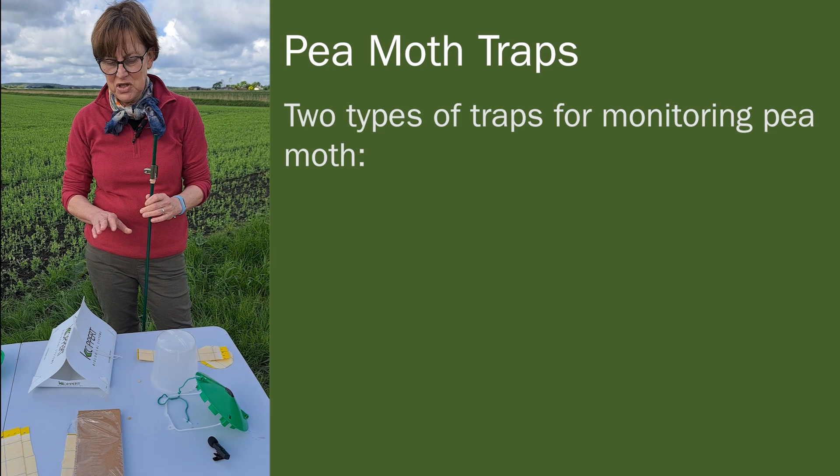I can't emphasise enough the importance of doing the monitoring and using our tool at PGRO. The system also tells you when you don't need to spray — if you don't reach a threshold in combining peas, there isn't a requirement to apply insecticides in the crop. That's equally important: it saves you time and saves you money. Now I'll show you the traps, how we put them together and how we put them into the field.